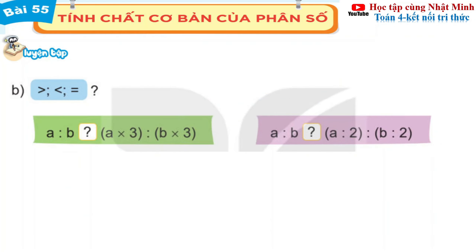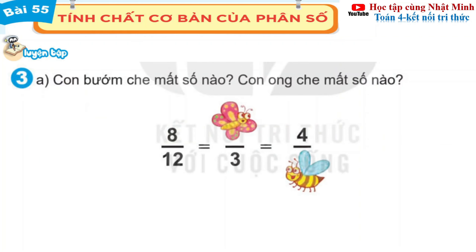Câu B điền dấu nhỏ hơn, nhỏ hơn hoặc bằng: Biểu thức A chia cho B bằng (A nhân 3) chia cho (B nhân 3), chúng bằng nhau. Biểu thức A chia cho B bằng (A chia cho 2) chia cho (B chia cho 2), chúng cũng bằng nhau.